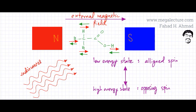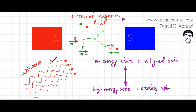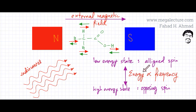Hydrogen protons exist in two states and resonate between them. The low-energy state is the aligned spin — by default, the hydrogen protons align with the external magnetic field. If the protons gain enough energy from radio waves by absorbing a particular frequency, they become energetic and go into opposing spin, the high-energy state. They resonate between these two states by gaining and losing energy, absorbing a particular frequency from the radio waves.